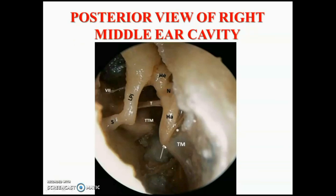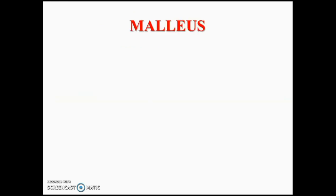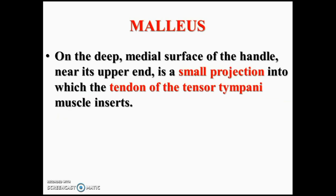You can see the posterior view of the middle ear showing the handle of malleus. The white arrow indicates the umbo of the tympanic membrane. The star indicates the space between the concave portion of the handle of malleus and the tympanic membrane — that is called the plica mallei, shown as the red zone. You can also see the neck and head of the malleus from behind, the long process of incus, and the stapes. This plica mallei can be opened surgically to create a slit without damaging the tympanic membrane, to allow instruments to be clamped around the malleus in certain ossicular reconstruction surgeries.